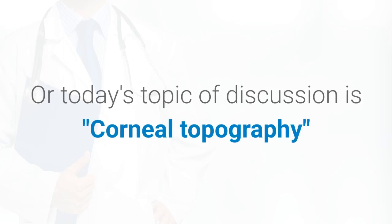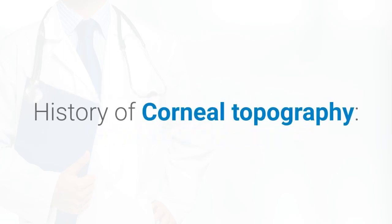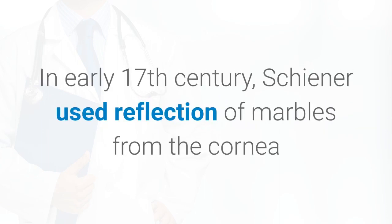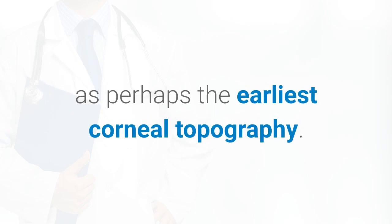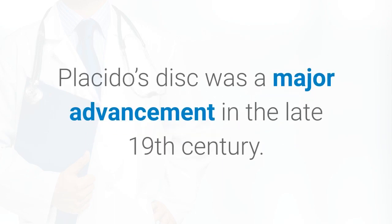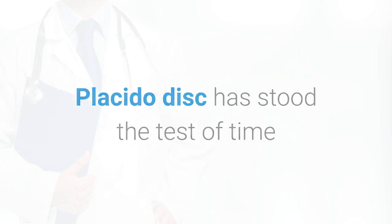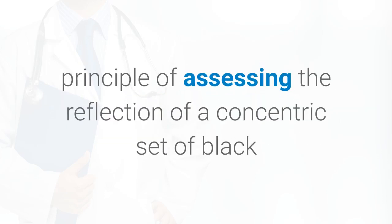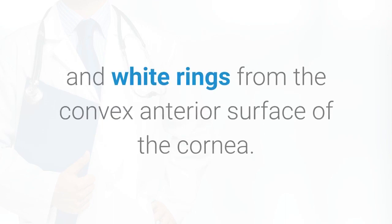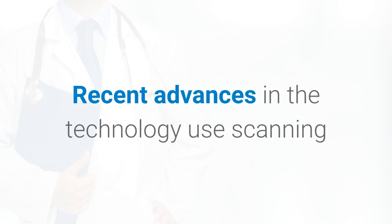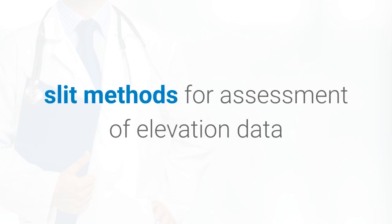Today's topic of discussion is corneal topography and its history. In the early 17th century, Scheiner used reflection of marbles from the cornea as perhaps the earliest form of corneal topography. Placido's disc was a major advancement in the late 19th century and has stood the test of time. Current Placido-based topographers work on the same principle of assessing the reflection of a concentric set of black and white rings from the convex anterior surface of the cornea.